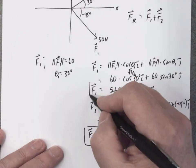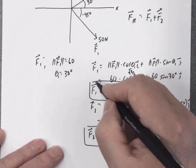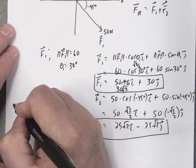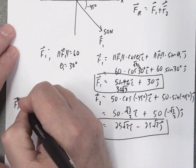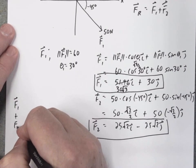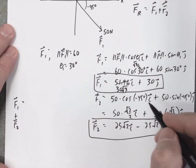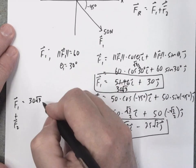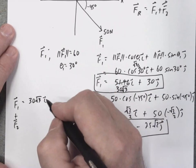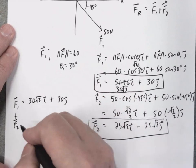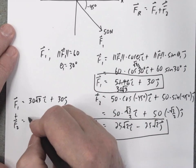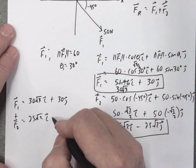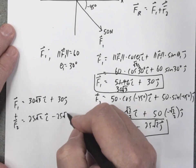So here are those two force vectors that are pushing on the same point. Now we can actually add them together. So I'll go over here, F1 plus F2. F1 is 30 square root of 3, I, plus 30, J. F2 is 25 square root of 2, I, minus 25 square root of 2, J.